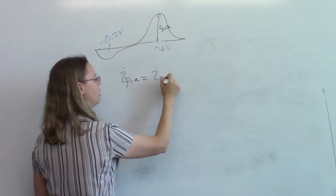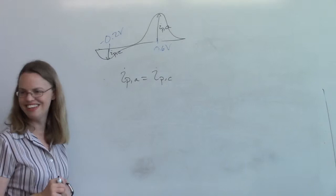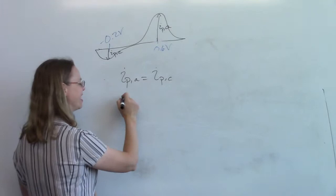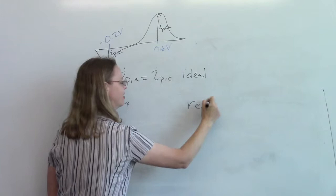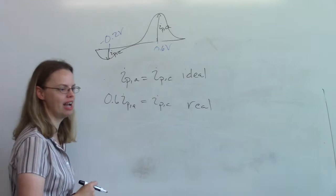And I didn't draw this incorrectly. They don't equal each other for dopamine normally. So this is ideal. And real is that our IPC here is usually only about 60% or something like that of IPA.